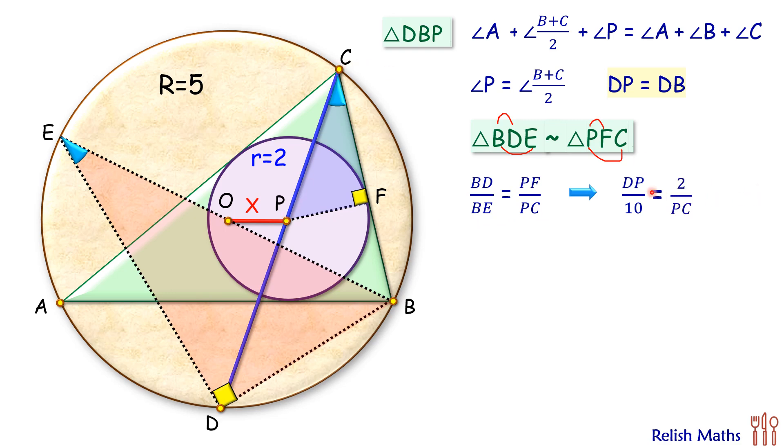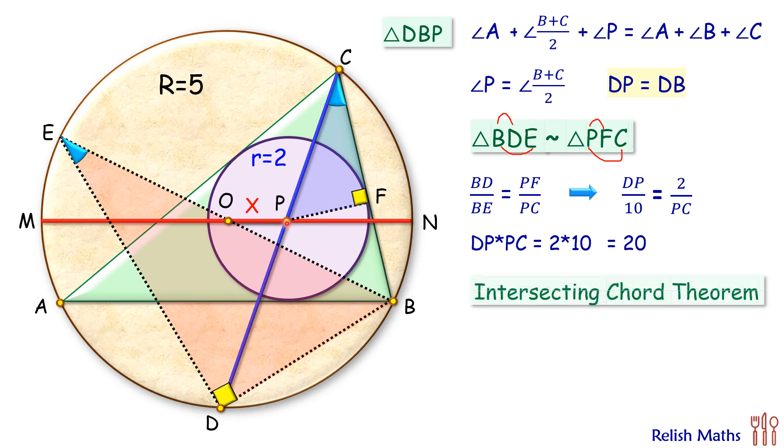Now let's extend this OP on both the sides. Now as it's passing through the center of bigger circle, thus we can say that MN is the diameter of bigger circle. Now these two chords, that's the blue one and the red one, they are intersecting at point P. So by power of a point or intersecting chord theorem, we can say that MP times PN is equals to DP times PC.